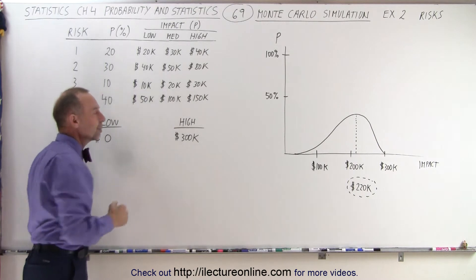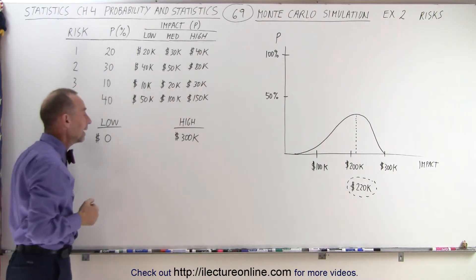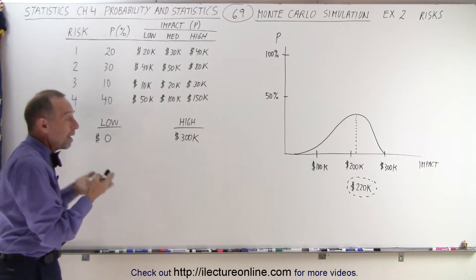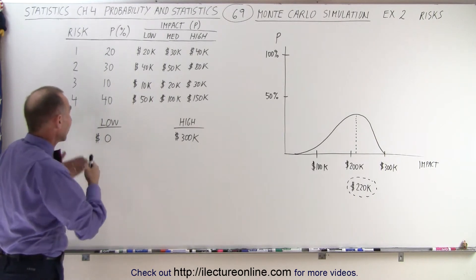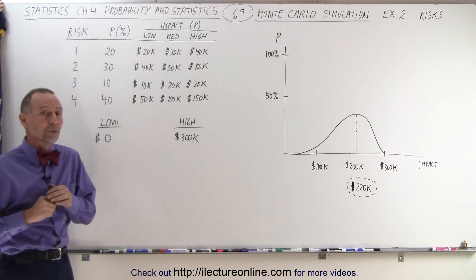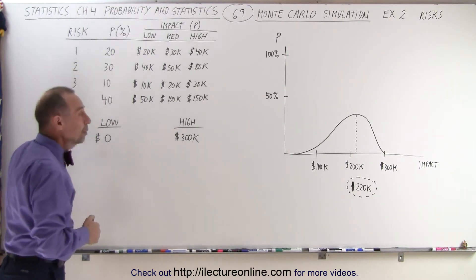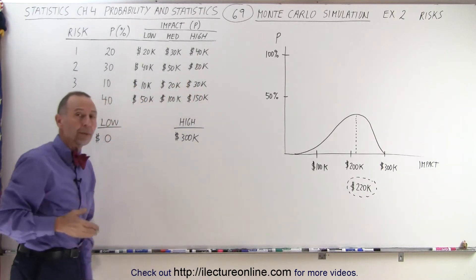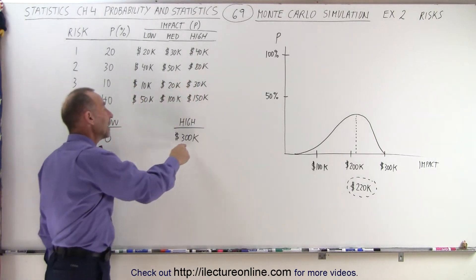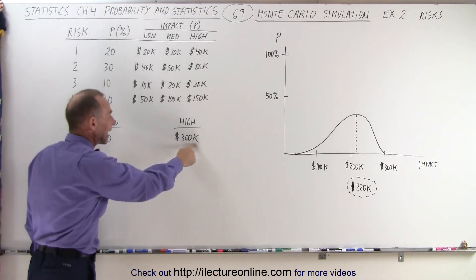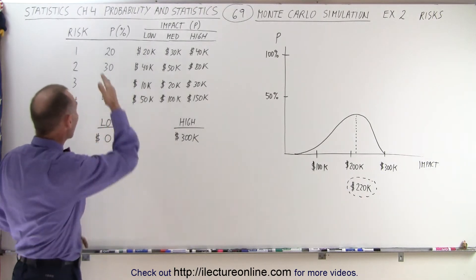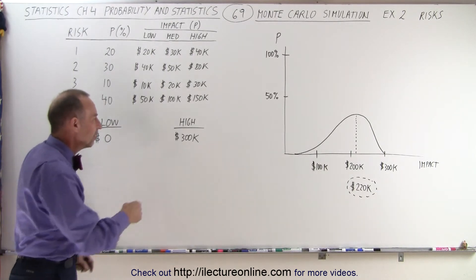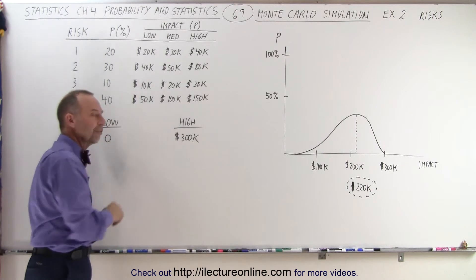We have a low estimate, a medium, and a high estimate for each of the risks, and a probability of what we think might happen when it occurs. Now, it's possible that none of the risks materialize, in which case there'll be zero additional cost to the program. But there's also a possibility that all of the risks materialize at the highest predicted cost, meaning the project would cost an additional $300,000. K stands for a thousand, so that would be $300,000 if all risks materialize at the maximum estimate. Of course, this is a very unlikely scenario.